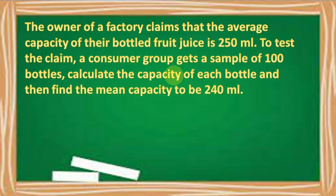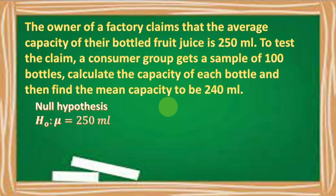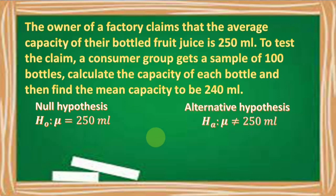For this given scenario, our null hypothesis is mu is equal to 250 ml. And for our alternative hypothesis, it is mu is not equal to 250 ml, because as we have noticed, the parameter and the statistic are not equal. Thus, we can also state that mu is less than 250 ml, because the sample mean is actually 240 ml.